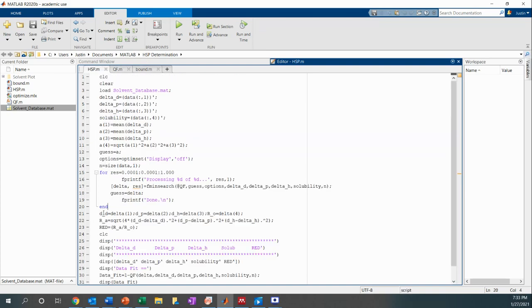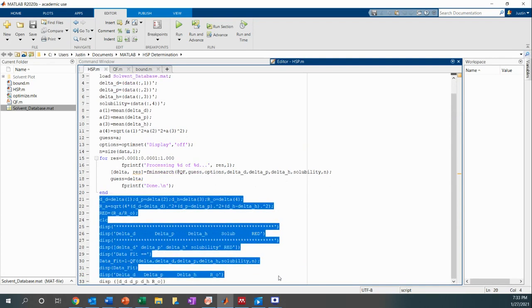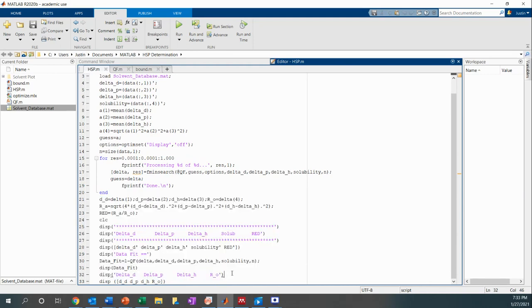After this finishes and the run with the data fit closest to one is found, the delta D, delta P, delta H values and the radius of the sphere are also outputted. And so also this algorithm displays the relative energy distance between the calculated sphere and the solvents that were inputted.